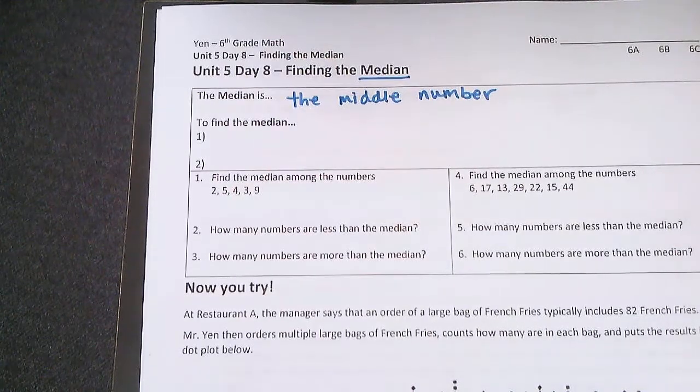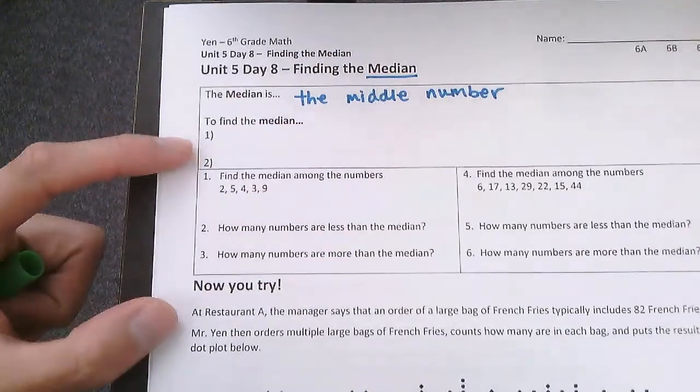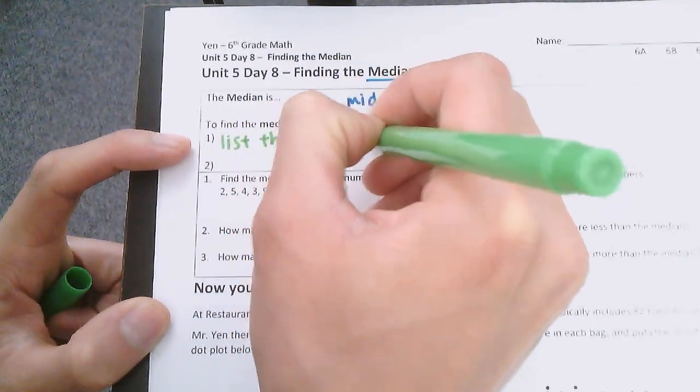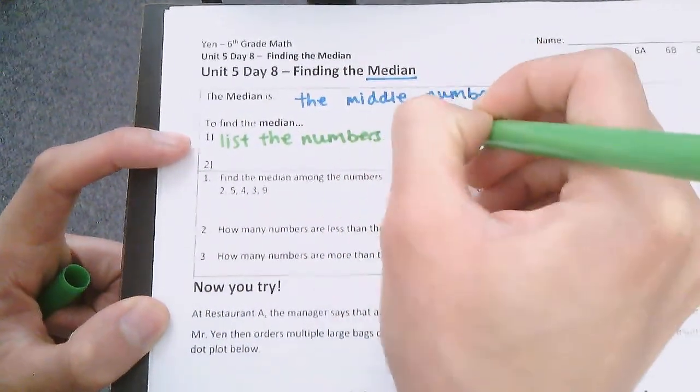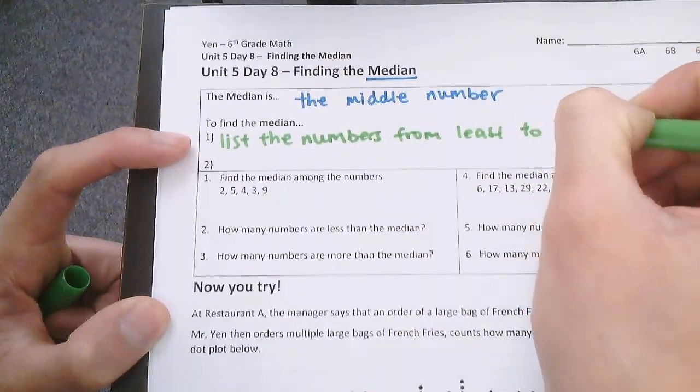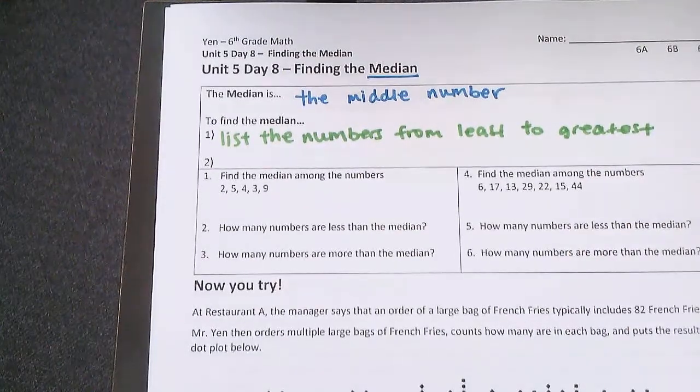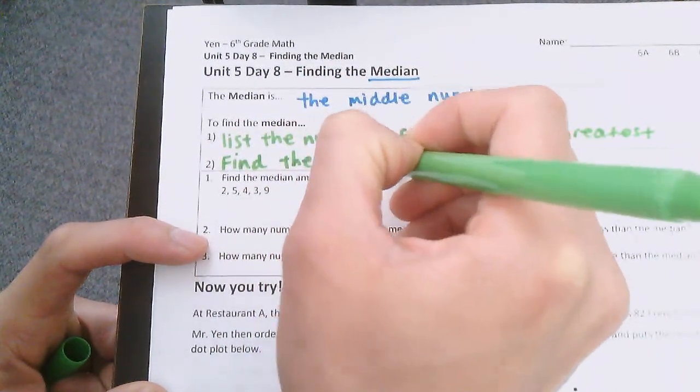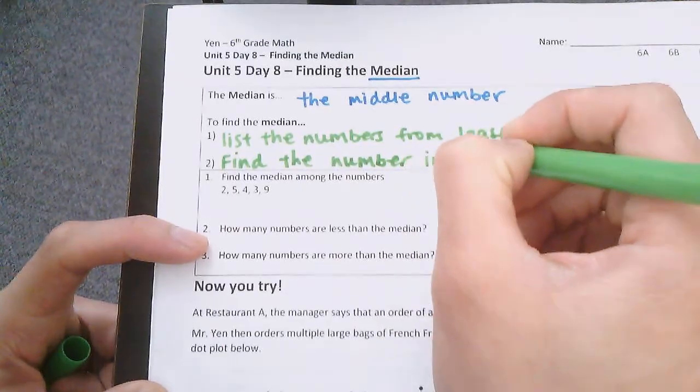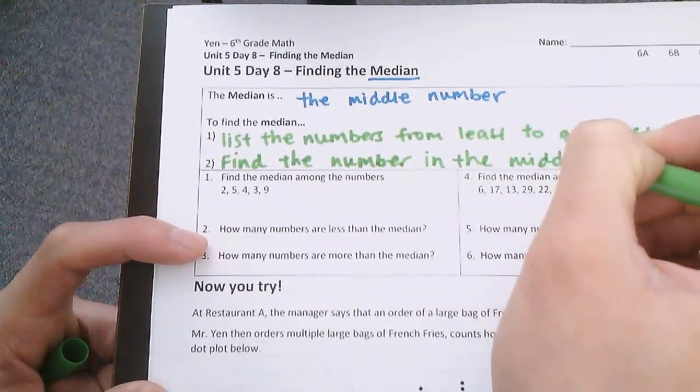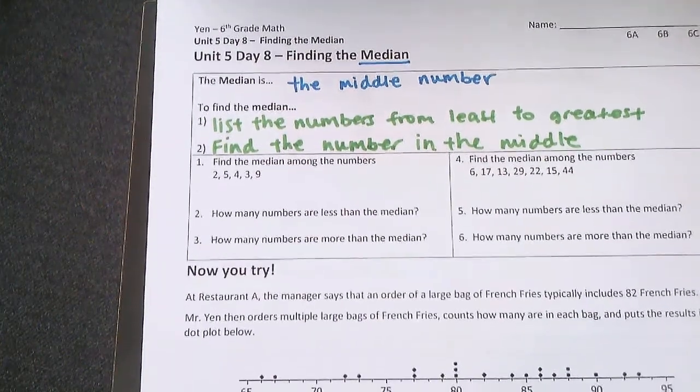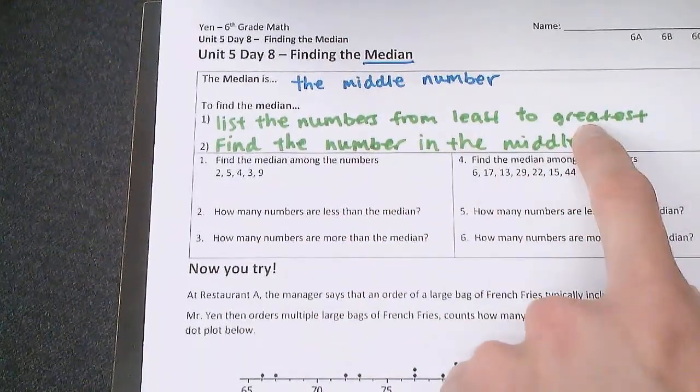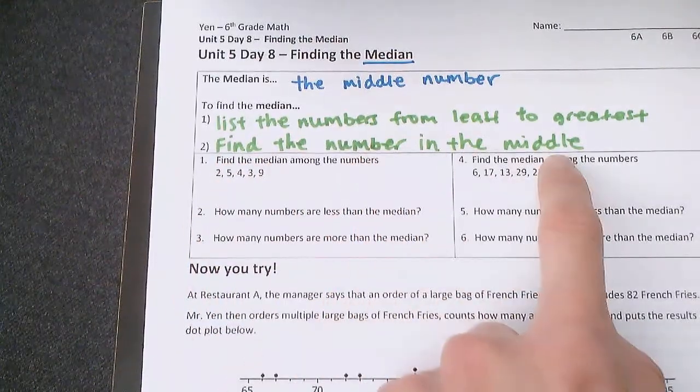So to find the median among a set of numbers there are two things you have to do. The first thing you have to do is list the numbers from least to greatest and then find the number in the middle. Got that? So the first step is list the numbers from least to greatest, from lowest to largest, and then find the number in the middle. Here's what that looks like.